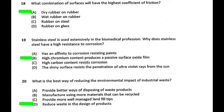Question 19 on biomedical engineering: why is stainless steel a good choice to resist corrosion in the body? The answer is chromium. High chromium content forms a passive surface oxide film. That's why the answer is B.